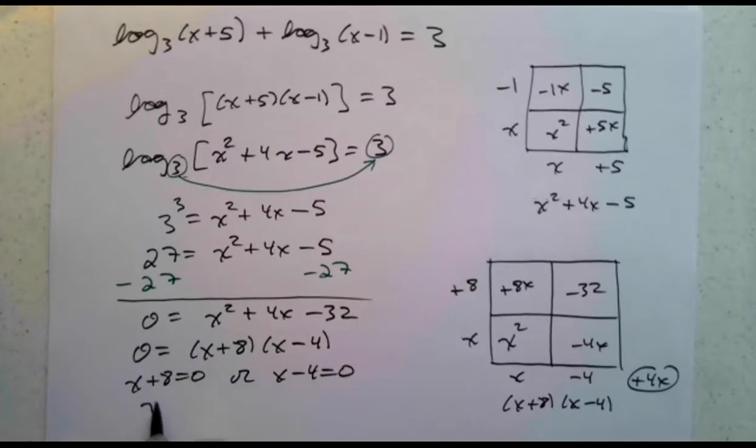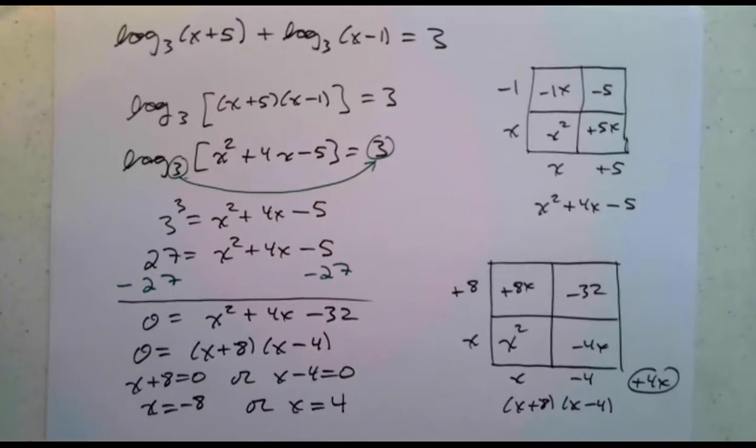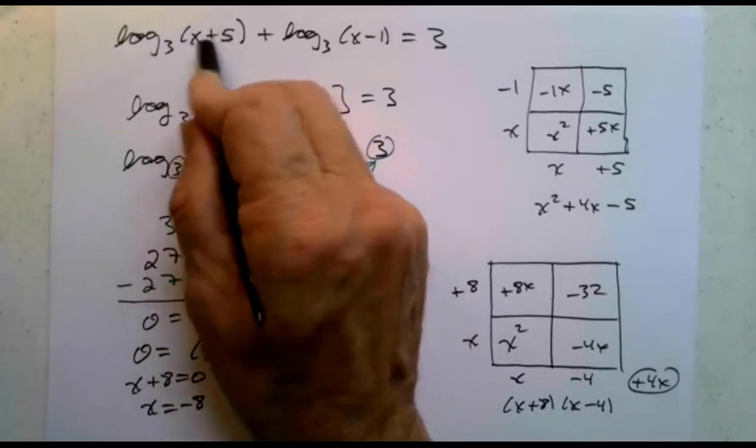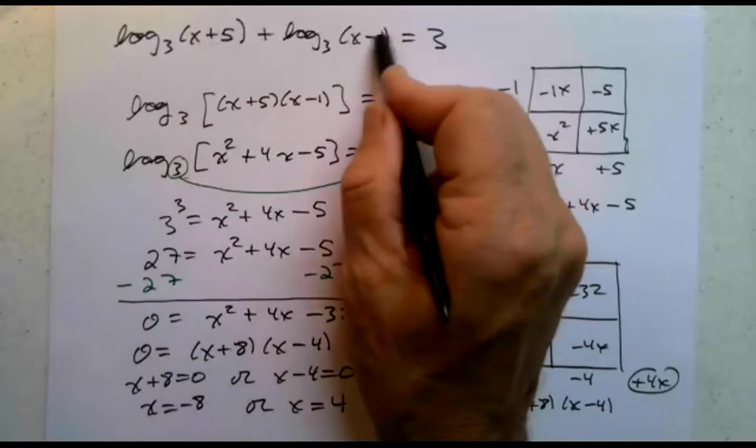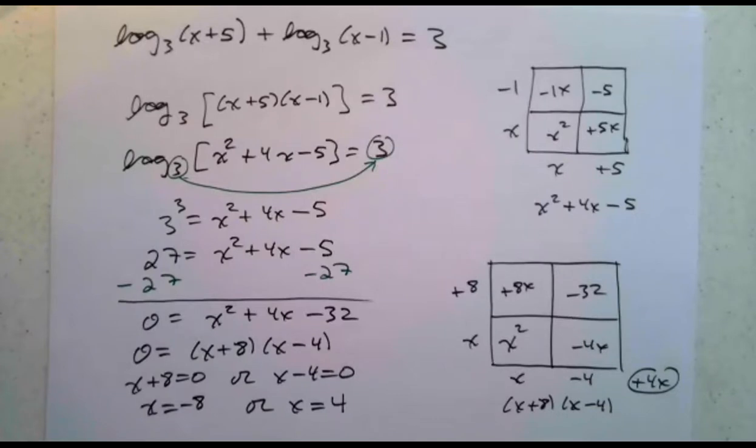If x plus 8 is 0, that means x is negative 8. If x minus 4 is 0, that means x is 4. But remember, you cannot take a log of a negative number. If I plug negative 8 up here, negative 8 plus 5 is negative 3. That would be log 3 of negative 3. Negative 8 minus 1, that would be log 3 of negative 9. The negative 8 solution is not acceptable. It is not in the domain.